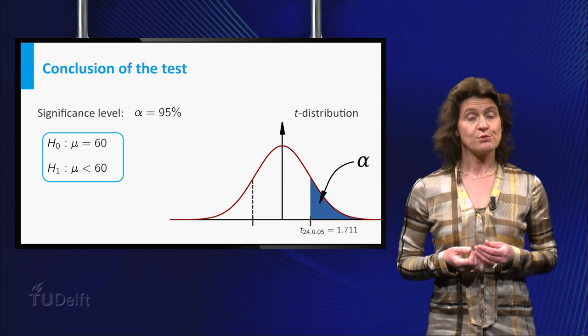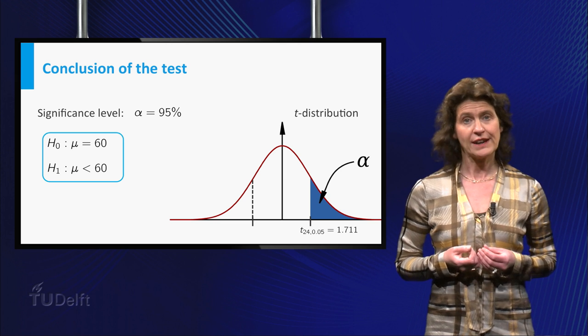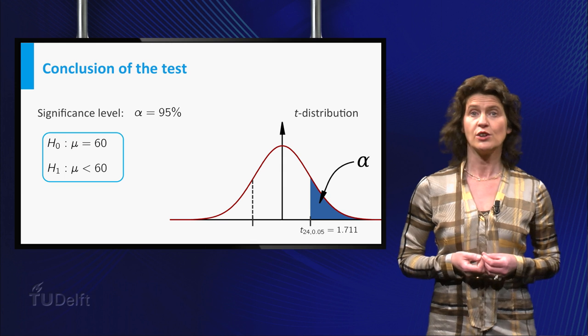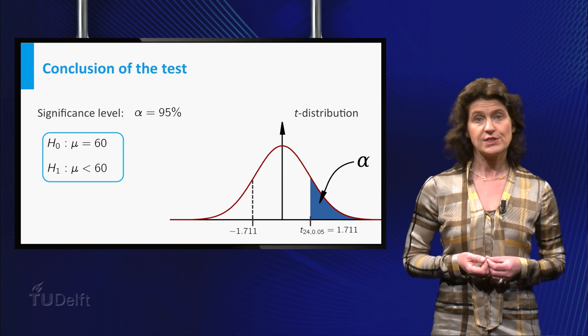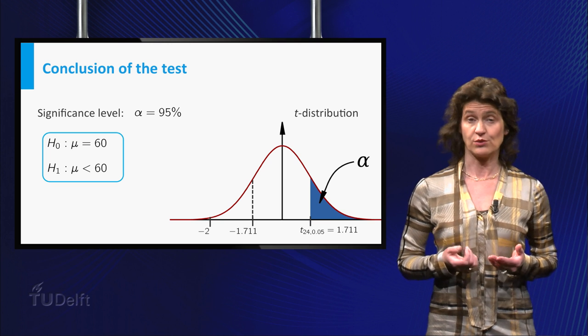Because the t distribution is symmetric, you compare the value minus 2 of your test statistic to the left critical value minus 1.711. And you see that it does lie in the critical region.